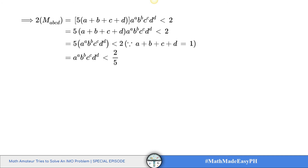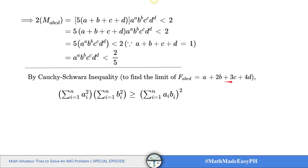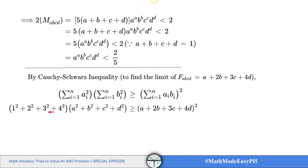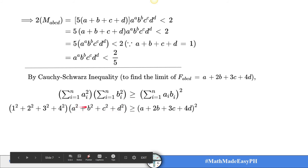To find the limit of f(a,b,c,d), I will use my favorite inequality: the Cauchy-Schwarz inequality, which is a truly wonderful and beautiful inequality. We substitute the numerical coefficients 1, 2, 3, 4 and the literal coefficients a, b, c, d into the Cauchy-Schwarz form, squaring each term accordingly, then prepare to simplify the whole expression.